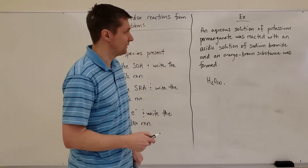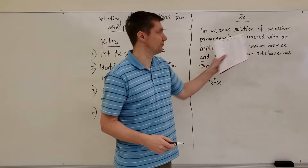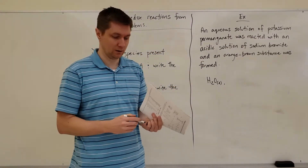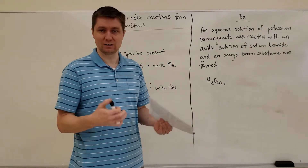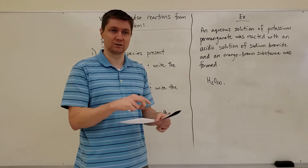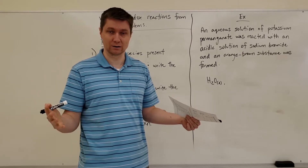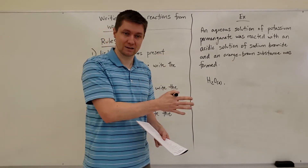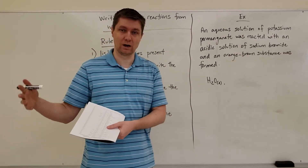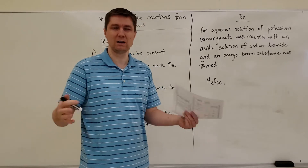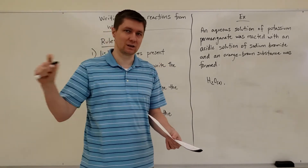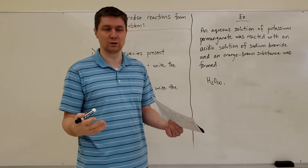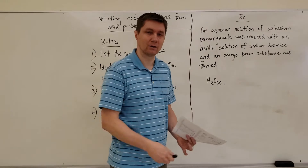Then it says potassium permanganate — it's an aqueous solution, so potassium permanganate is dissolved. If it's dissolved and it's an ionic compound, it's going to dissociate into its ions. So it won't be KMnO4 (aq); it will be K⁺ (aq) and MnO4⁻ (aq). How many of them doesn't matter — I'm just listing species present, not worried about amounts at this point.